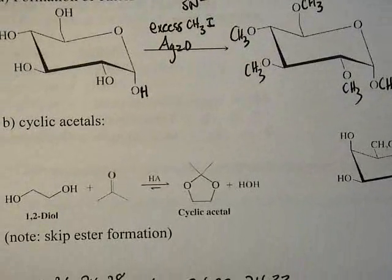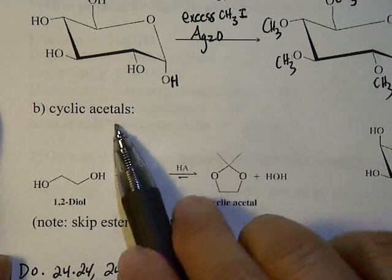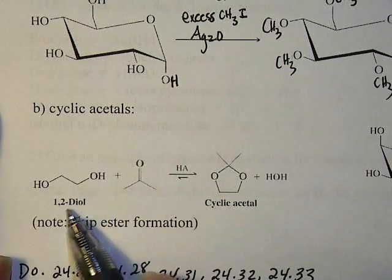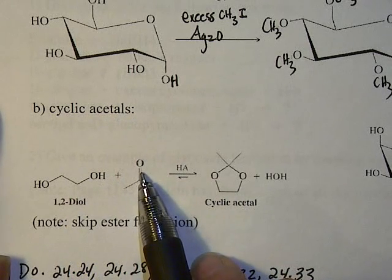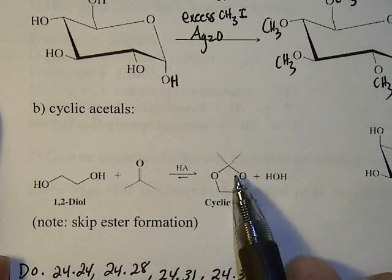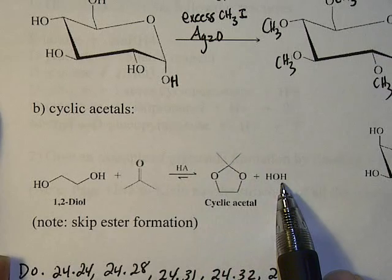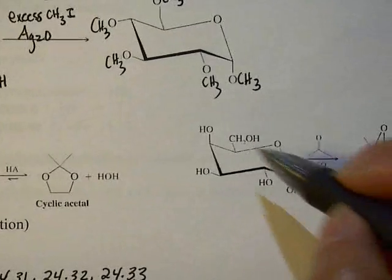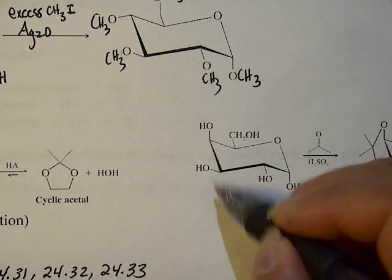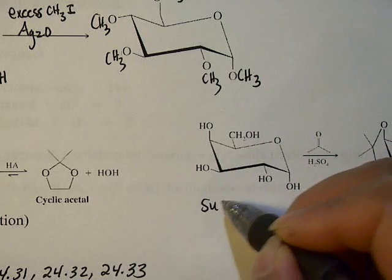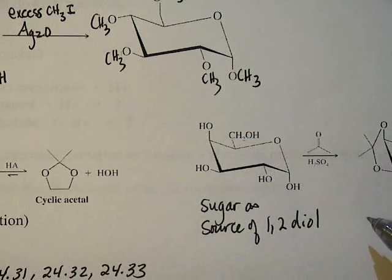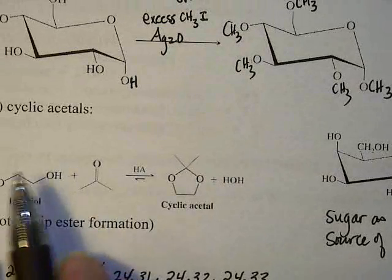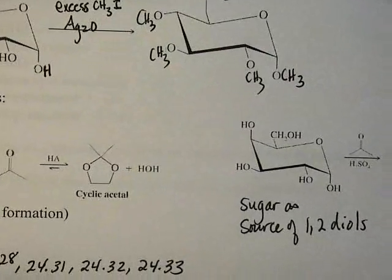Another way to make an ether in a cyclic acetal form is to use a 1,2-diol with some kind of carbonyl under acidic conditions. You've seen this before when making a cyclic acetal, and the byproduct is water. If you look at the sugar and identify all the 1,2-diol pairs, we can now use the sugar as a source of 1,2-diols, just as in this example.